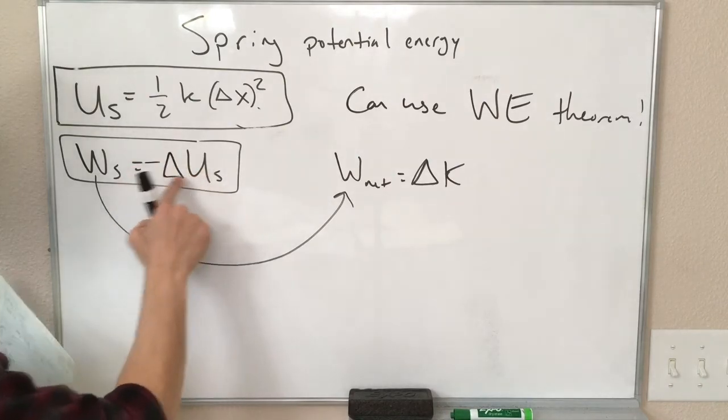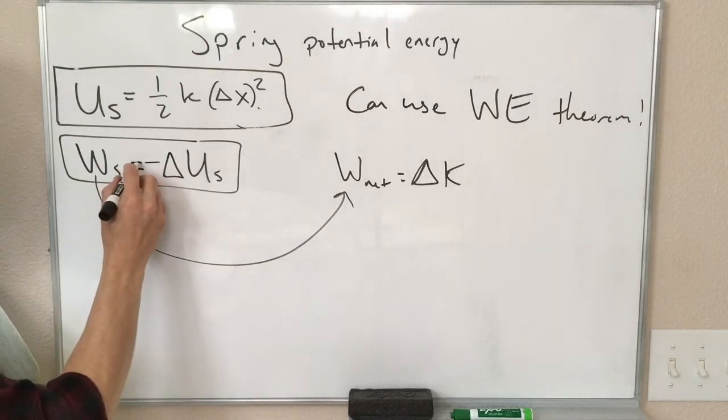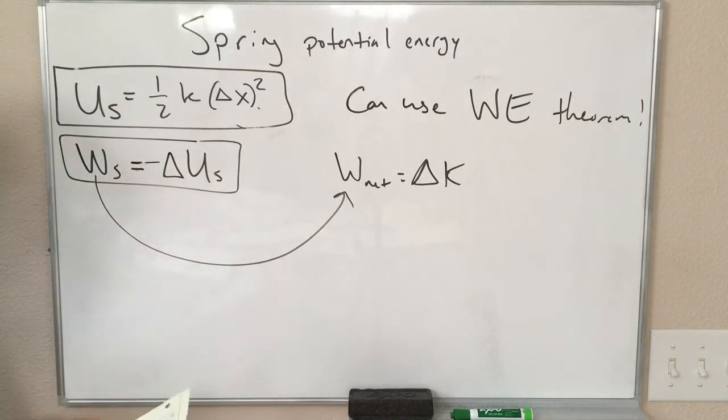There's supposed to be a delta here. This is the minus the change in the potential energy. So let's do a really quick example of this.